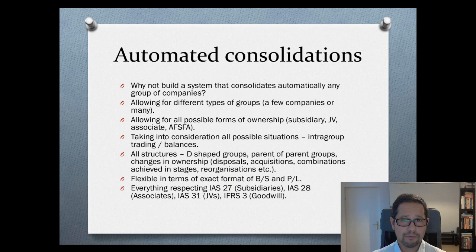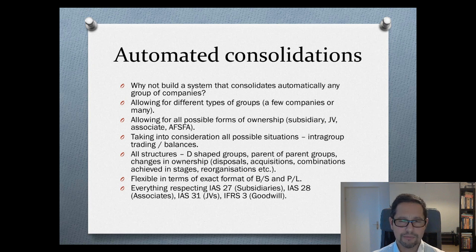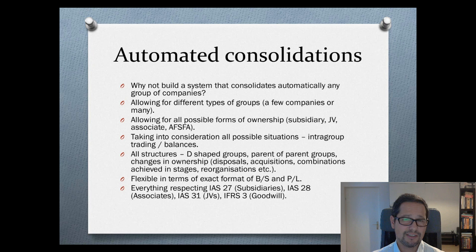The idea was to have automated consolidations allowing for different types of groups - between three companies, 30, 50, 60, whatever. All forms of ownership: subsidiaries with more than 50% ownership; joint ventures at 50/50 - where there's also a very interesting discussion because you have two methods; associates which would be above 20%, where you still have a significant interest in those companies; and available-for-sale financial assets. Taking into consideration all the possible situations and adjustments needed.